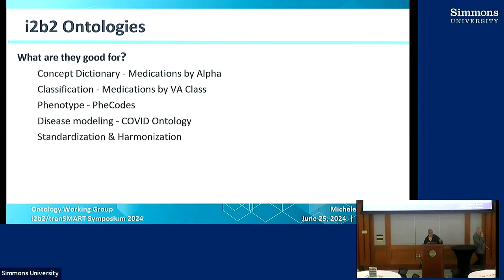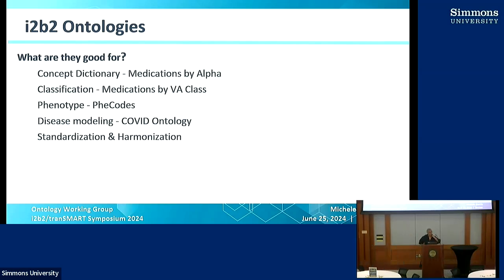We will dive into our random set of features that we would like to expose to everyone and hopefully get people to use them more often. So in general, what is an i2b2 ontology good for?